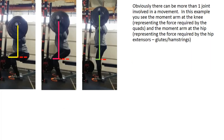For most lifts we have multiple moment arms. Taking that same squat and adding in the moment arm at the hip, at the bottom we see the greatest distance between the hip joint and the load. As the person stands up, the distance between the hip joint and the load decreases, and near full lockout it decreases even further. So as the person stands up, there's less work required by both the quads and the hip extensors — glutes and hamstrings — simply because the moment arm is decreasing.